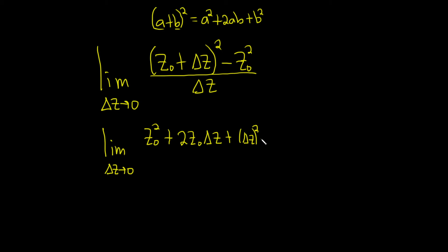Then we still have the minus z0 squared. It's all being divided by delta z. So this is the limit as delta z approaches 0.